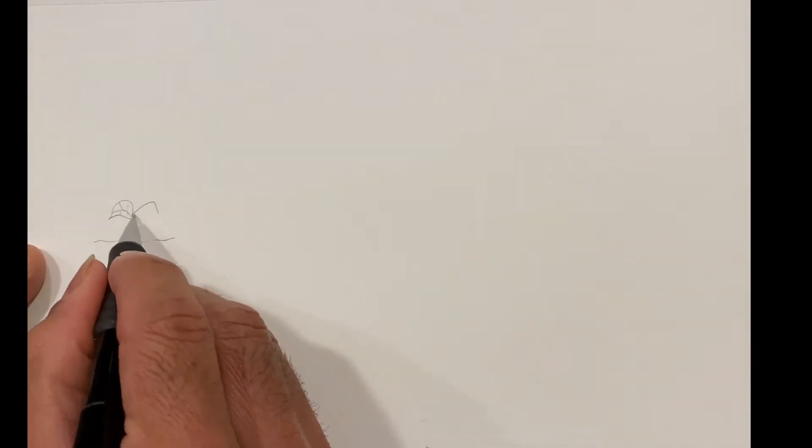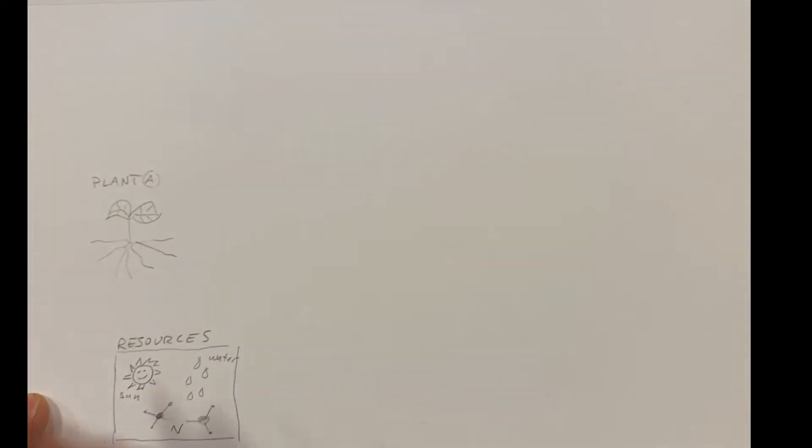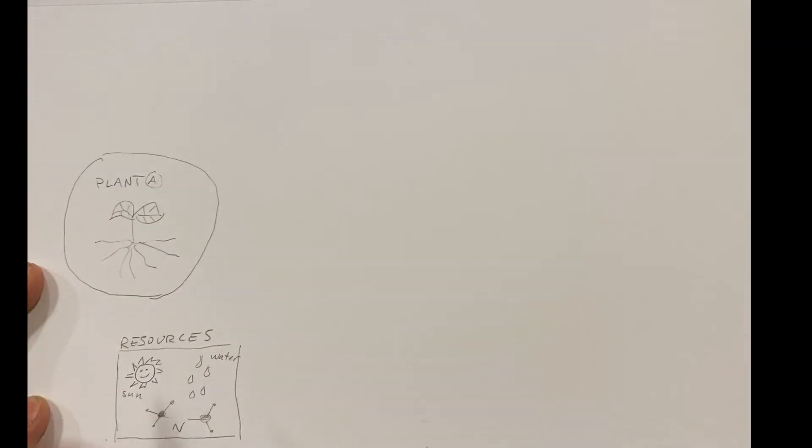Here's our little plant with its roots below ground, little leaves. We'll just call this one Plant A. And the plants are basically utilizing the key resources from the environment, the sun, nutrients, and water.